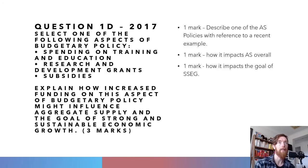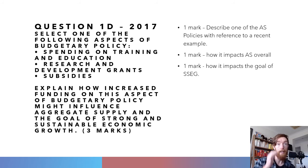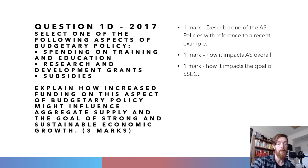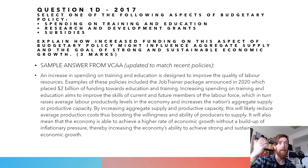Question 1D from 2017 is very similar but adds an extra option. Select one of the following: spending on training and education, research and development grants, or subsidies — and explain how increased funding on this aspect might influence aggregate supply and the goal of strong and sustainable economic growth. One mark for describing the policy with a recent example, one for how it impacts aggregate supply, and one for how it impacts the goal of strong sustainable economic growth with its definition. I've updated the sample answer with Job Trainer as the recent example.